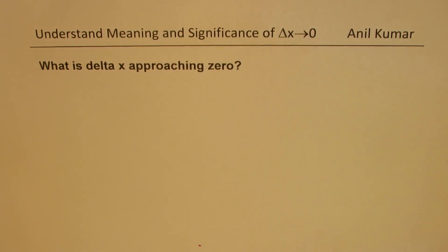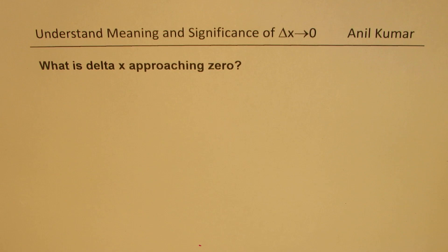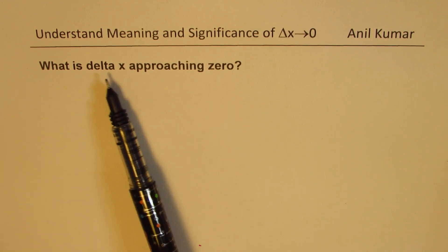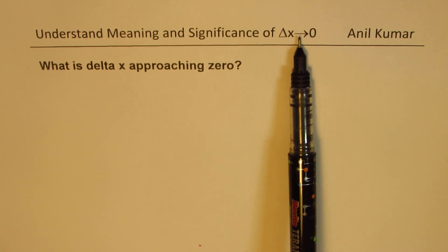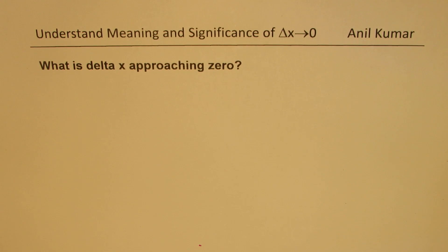I'm Anil Kumar, welcome to my series on calculus. Before we even begin with the major topics, it's important for us to understand a few terms. This is a very common question normally heard after the first lecture on calculus — students are still puzzled to understand what is Delta X approaching zero. Delta X, written with an arrow to zero, is a term commonly used throughout the whole book of calculus and very difficult to understand for beginners. Let's try to make an attempt to understand this term.